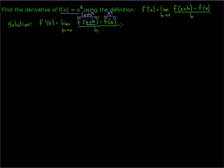So what we end up with here is the limit as h goes to 0. Now instead of f of x plus h, we have this formula: x plus h, quantity squared, minus x squared, all divided by h.